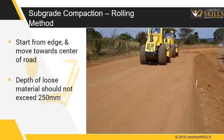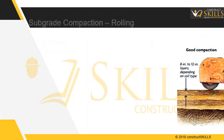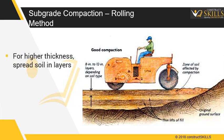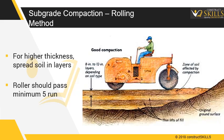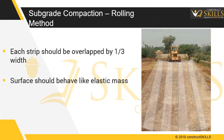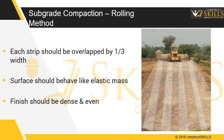The subgrade should be shaped to the required final profile. For higher thickness subgrades, install in layers. Static rollers should be made to have a minimum of 5 passes over each strip. Each strip should be overlapped by one third of its width. Rolling should continue till the surface behaves like an elastic mass and is dense and even.